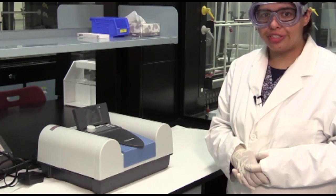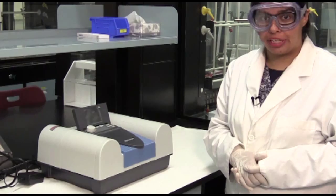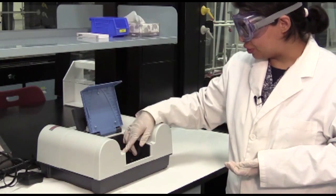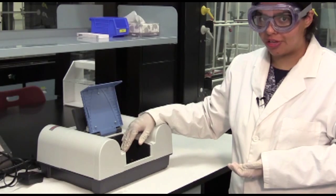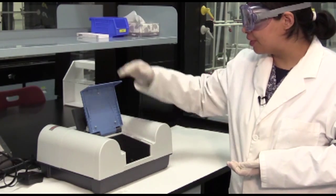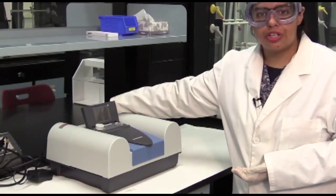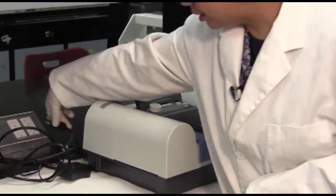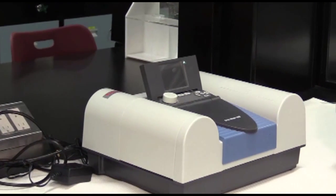When you are done for the day, make sure you shut the instrument off properly. First of all, open the compartment, and make sure that you have no cuvette and no sample on the inside of the compartment. Close the compartment, turn the instrument off from the back, and pull the plug out. And that's the shutdown procedure.